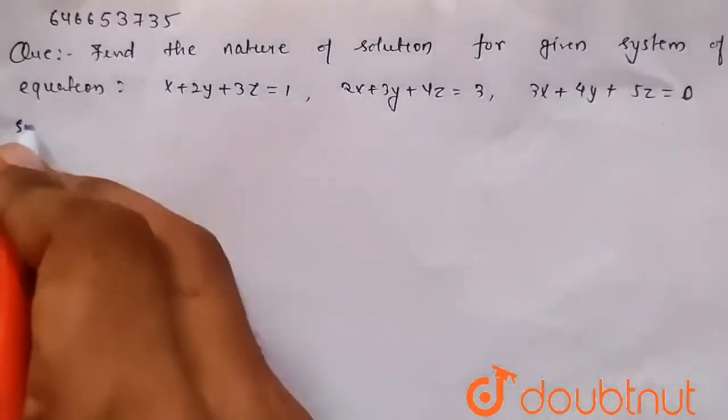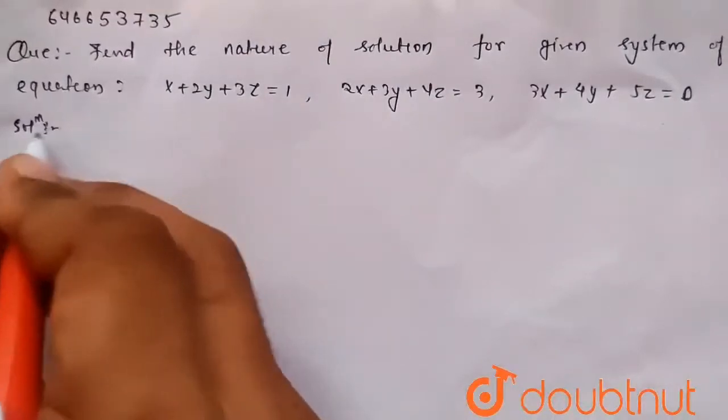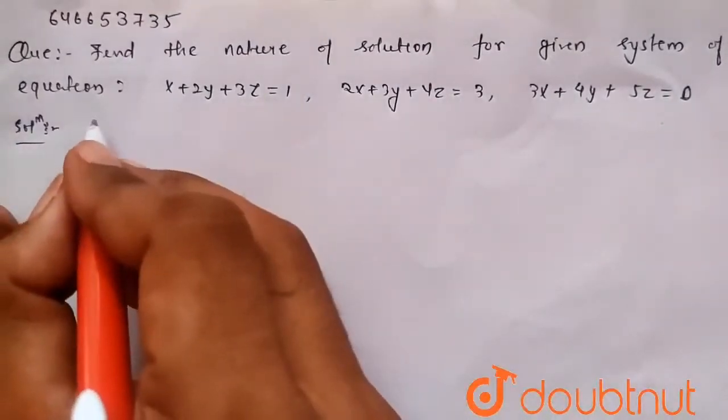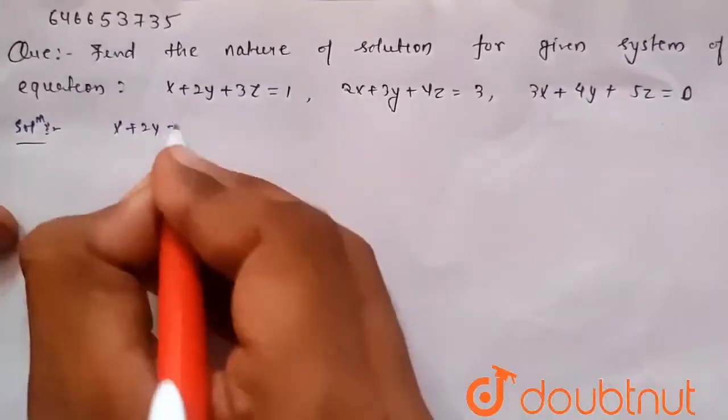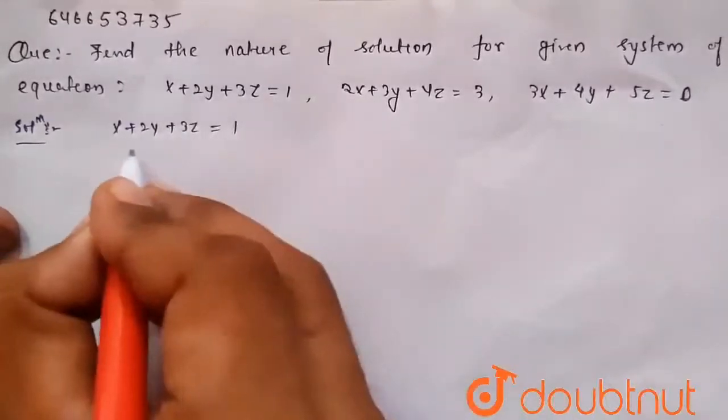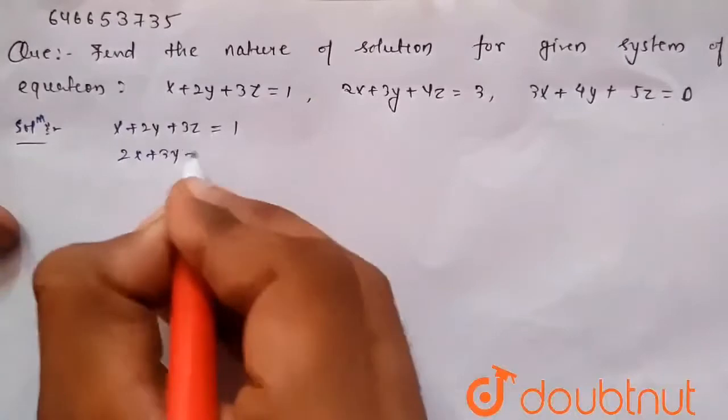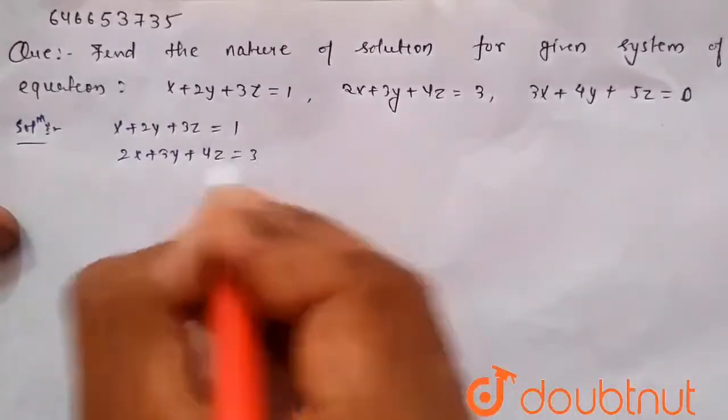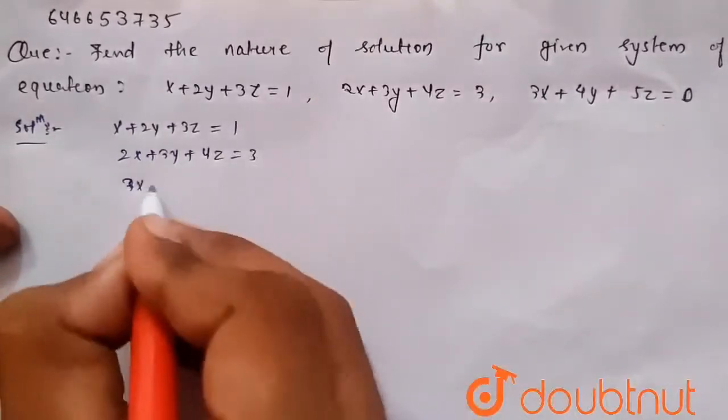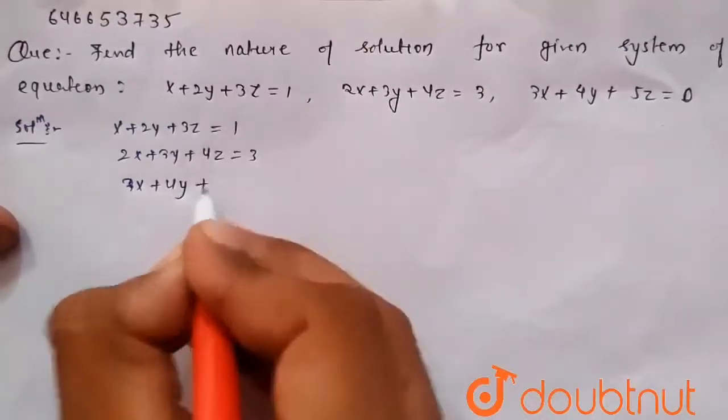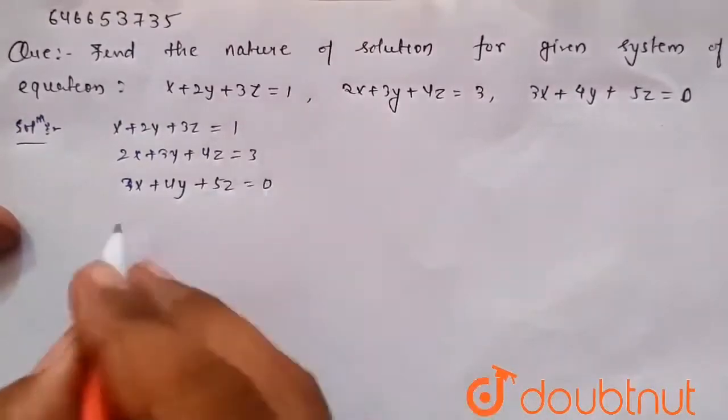So in solution part, first the given system of equation has non-homogeneous equations: x plus 2y plus 3z equals 1, 2x plus 3y plus 4z equals 3, and 3x plus 4y plus 5z equals 0.